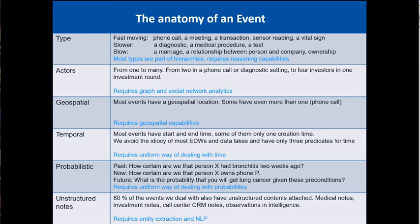The other thing is probabilistic — nothing is certain in life. If I look at what we've been doing with knowledge graphs in defense over the last two to three years, nearly every event has a probability attached to it. A doctor can never be really certain if a patient says they had bronchitis two weeks ago.